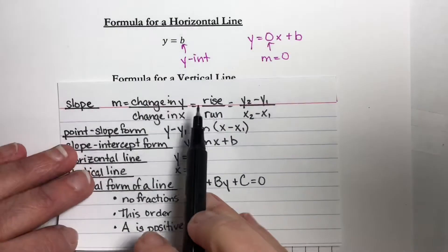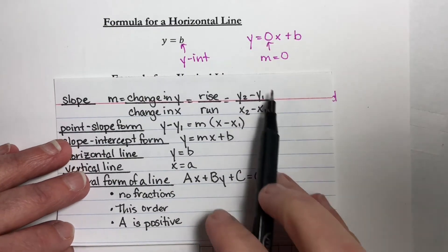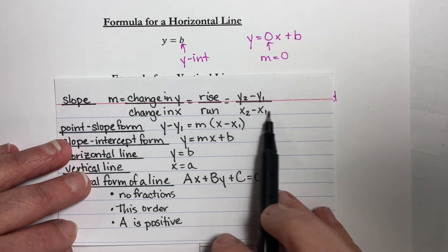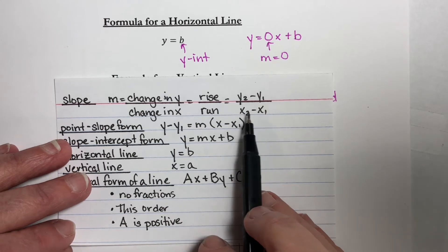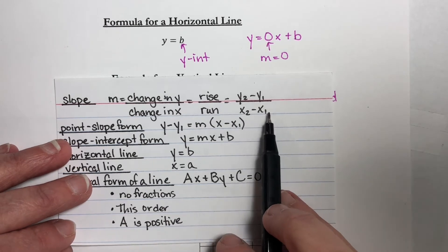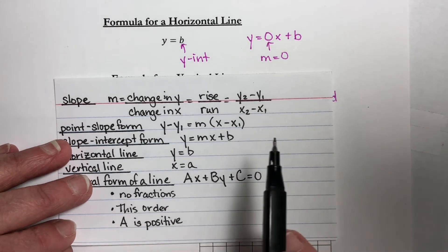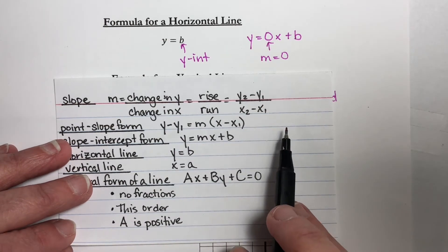And so when might that happen? Remember, a division is undefined if our denominator is 0. So if our x-values happen to be the same, when we do the subtraction, we get 0 in the denominator. And that means we're going to have a vertical line.